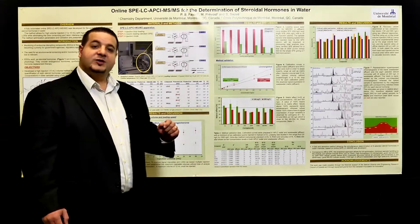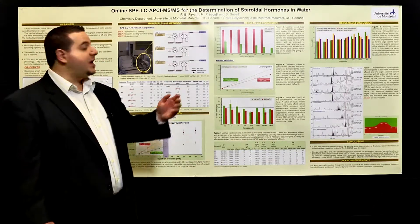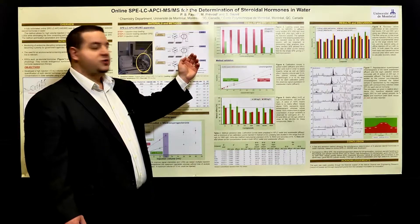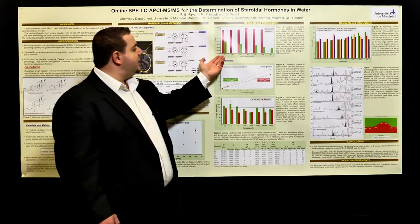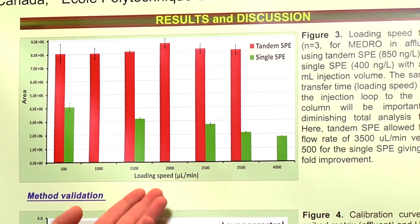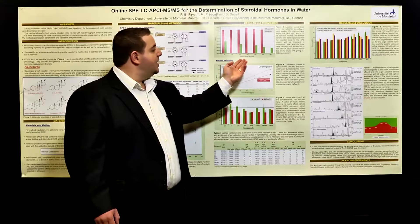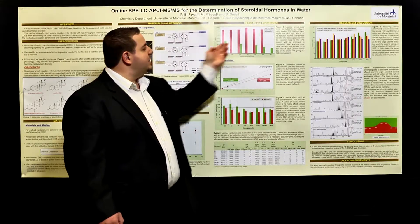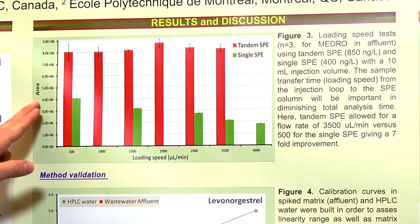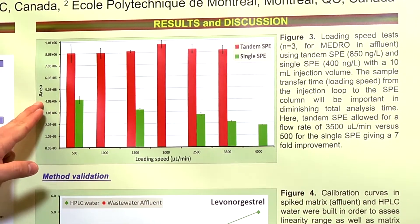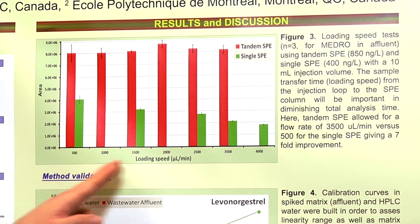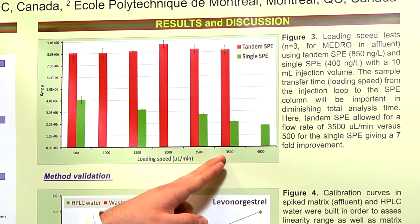Another very important parameter, especially for online SPE, is the loading speed. As shown in Figure 3, we're using 500 to 4,000 microliters per minute. With the tandem SPE method, the absolute area on the y-axis stays constant throughout the different speeds tested.